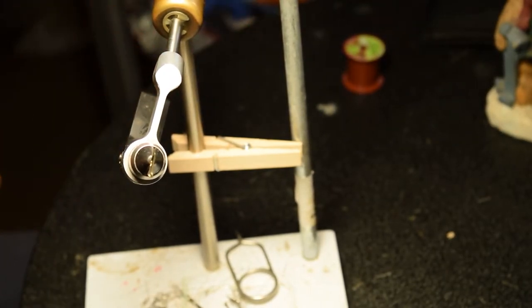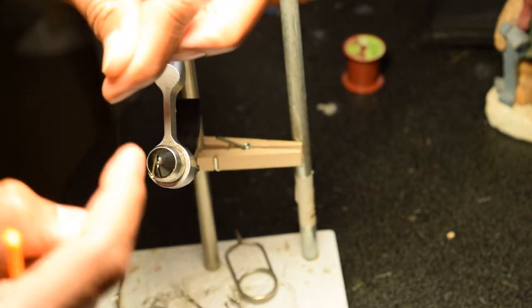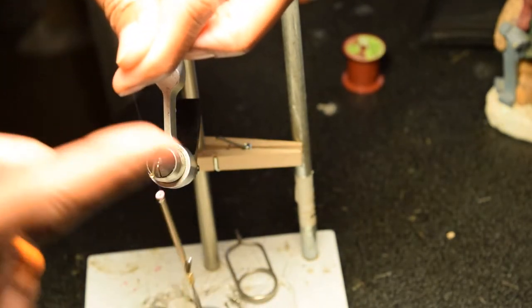With a paternoster rig it doesn't matter. The weight is at the bottom and then you come up and you have a dropper loop that'll have your bait on it.